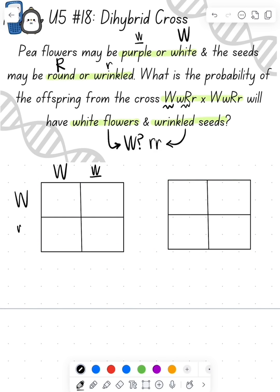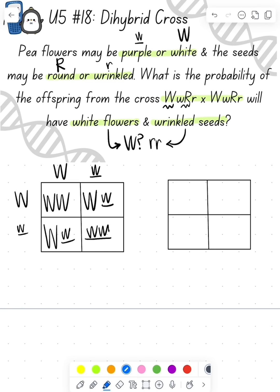So if we go ahead and do that cross, we'll see that one-fourth are homozygous dominant, one-half are heterozygous, and one-fourth are homozygous recessive. So we're going to shade in the ones that are white — one, two, three. Three-fourths of them will have white flowers.